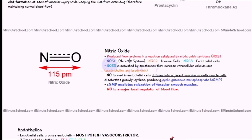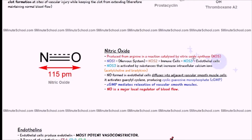Nitric oxide is produced from arginine and catalyzed by nitric oxide synthase. We have three types of this enzyme: number one, number two, and number three. You'll find number one mostly in the nervous system, number two in the immune cells, and number three in the endothelial cells. That's what we want to focus on here — NOS3.